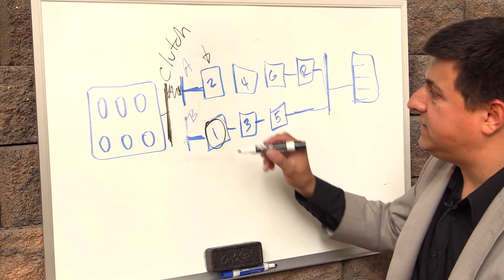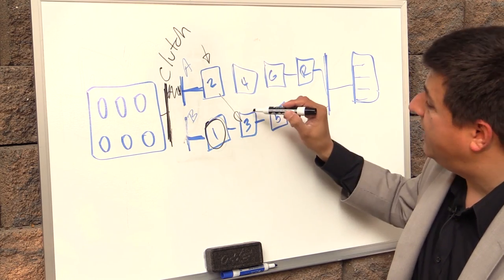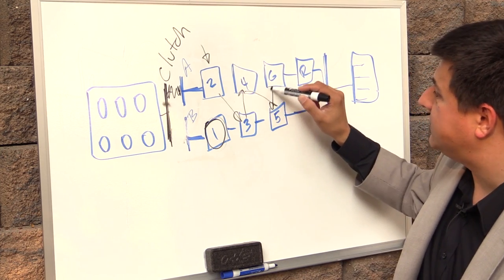The process then repeats itself and it transitions back from this transmission onto this transmission for gear 3 and then from this transmission back to that transmission for gear 4, 5, 6 etc.